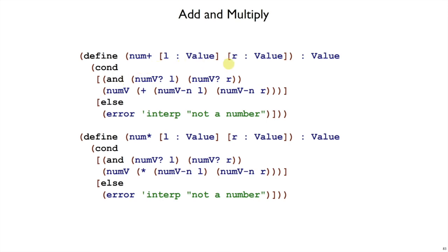If either l or r are functions, if they're not numbers, then we can complain, just not a number. So this is what we have to do to replace the plus that's in plate to have a num plus that will work on values instead of just numbers.